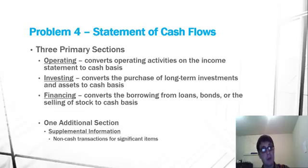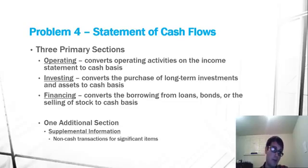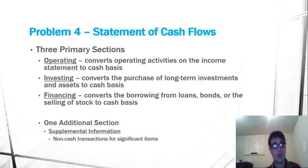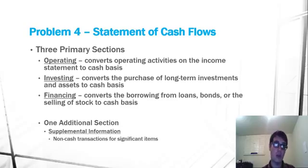With that in mind, we're going to have to plug in the information from the question into these four different sections. Operating activities converts operating activities for the company from the income statement to the cash basis. So normally we're reporting according to GAAP on an accrual basis, and the statement of cash flows is going to change that accrual basis to a cash basis. Operating activities are going to be those in the normal course of business for a company.